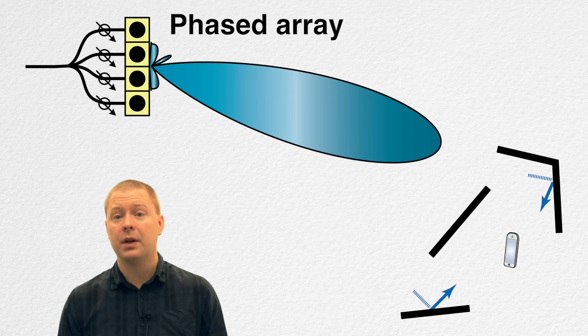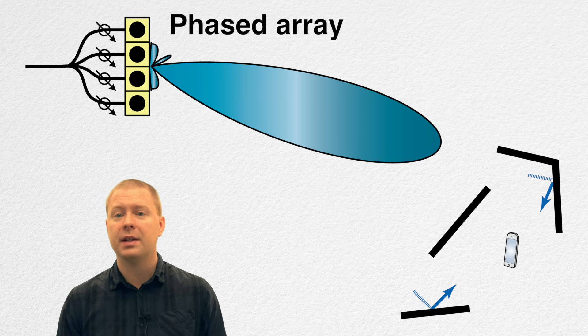Here you can see an example of the problem with using these types of things like phased arrays. This is a user where there is no particular path that leads best to this user. There are two different strong directions that you can send the beams in to bounce off different objects and get the signal to reach the user. If you use the phased array, you need to select only one of them.